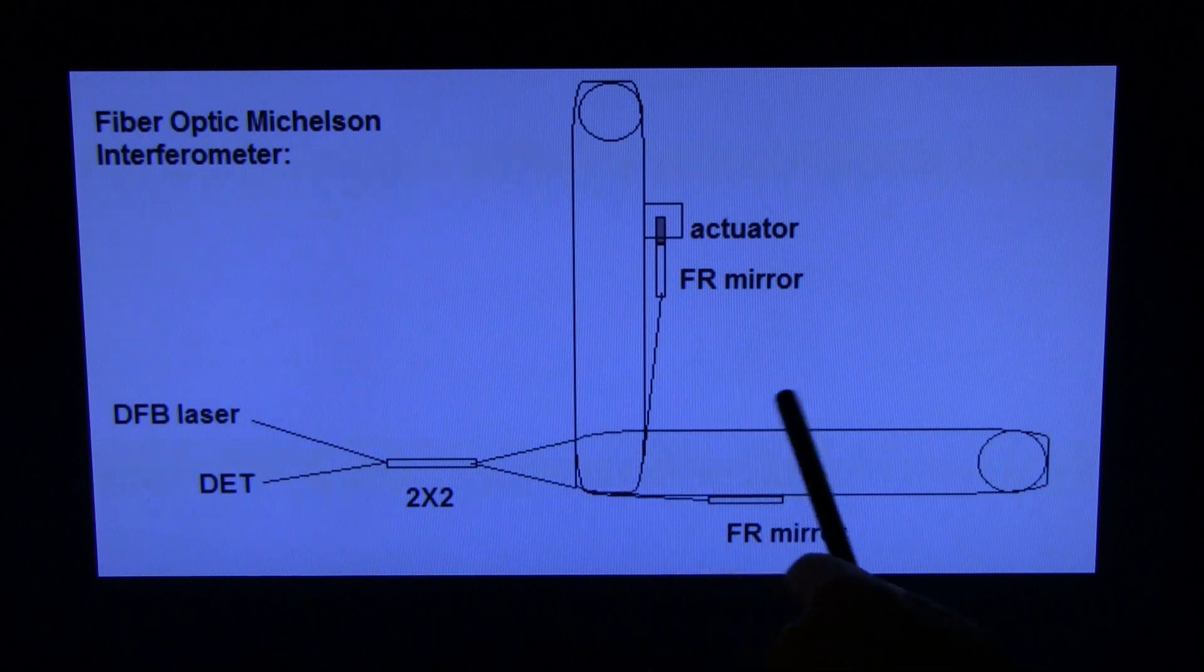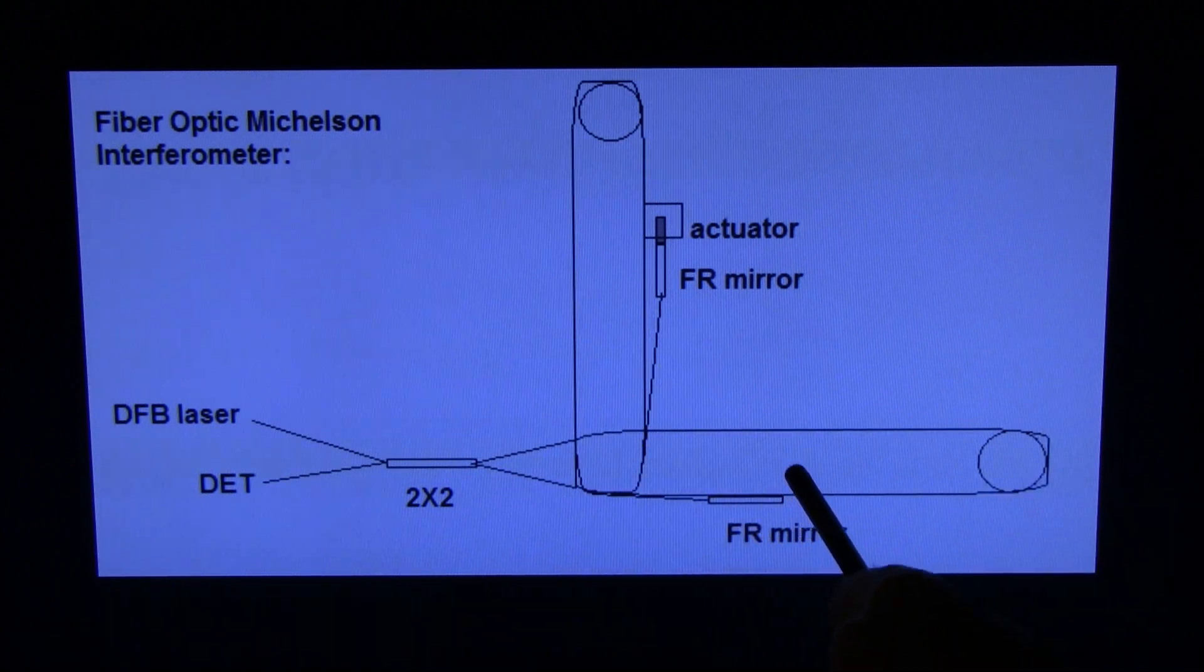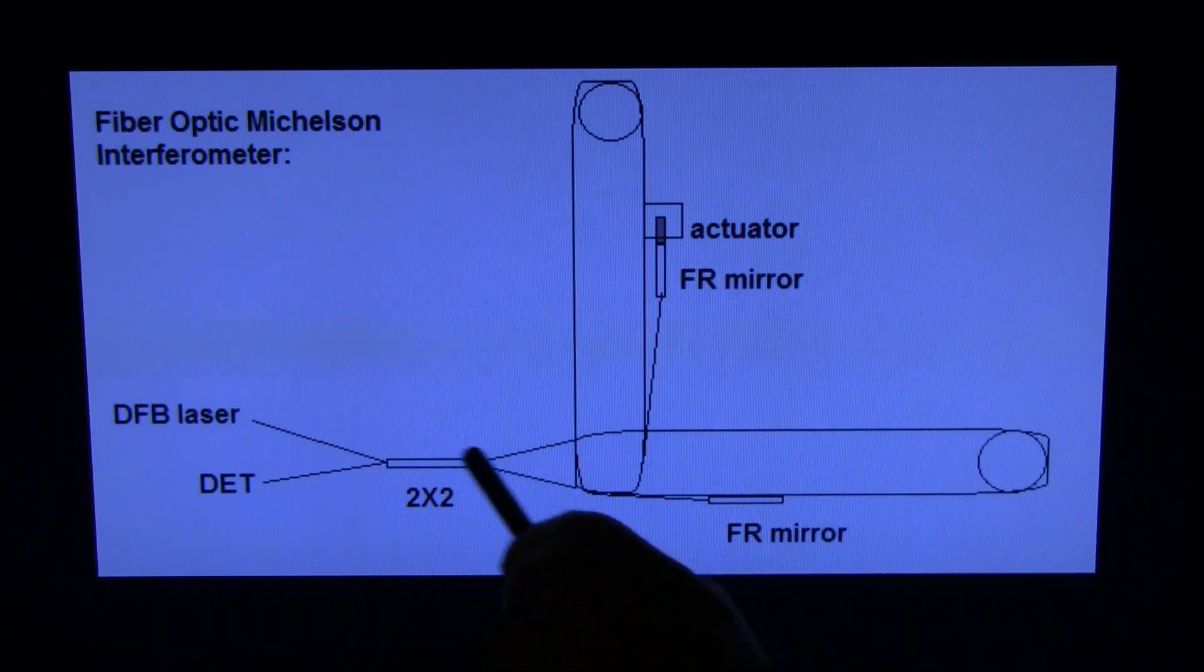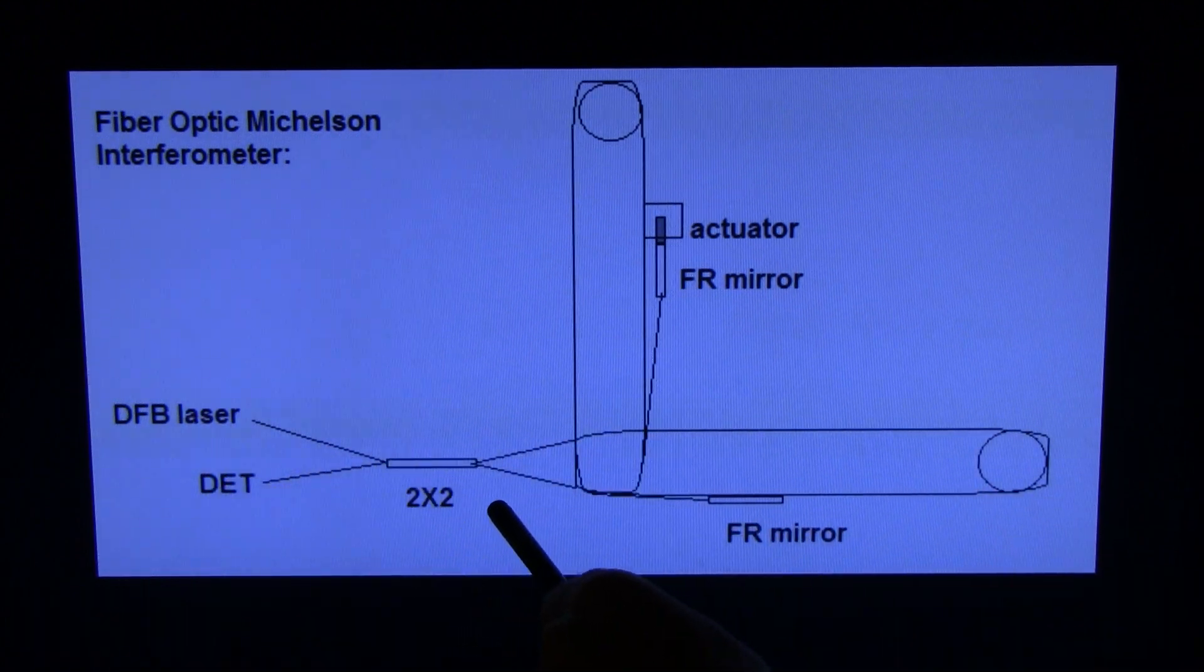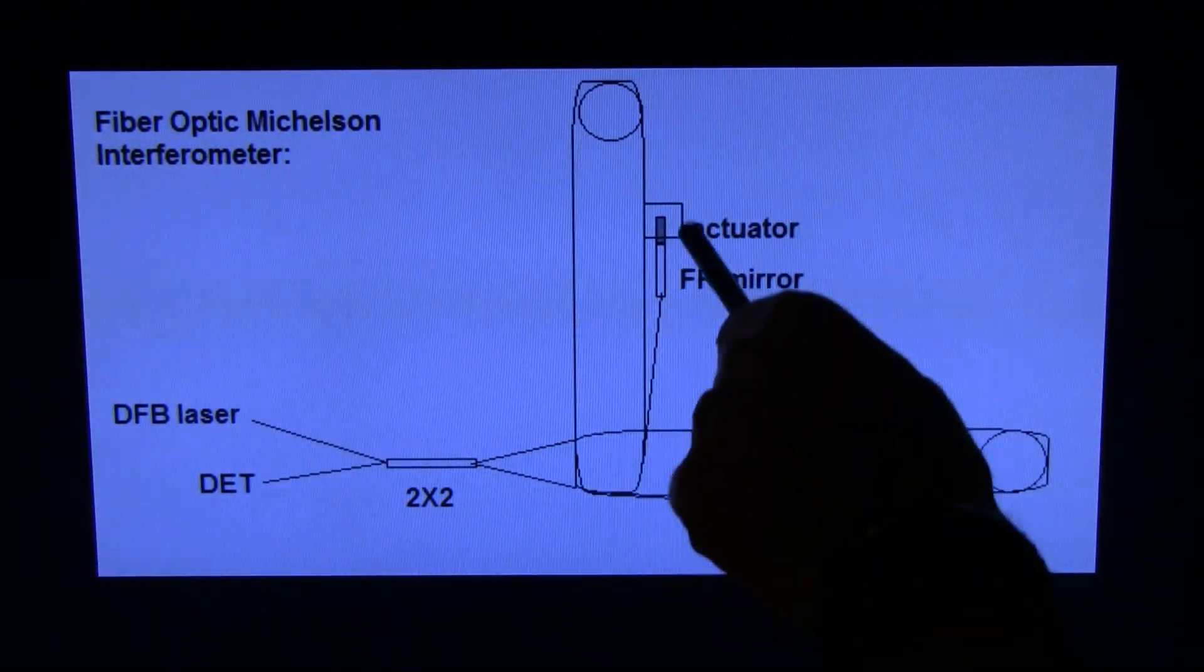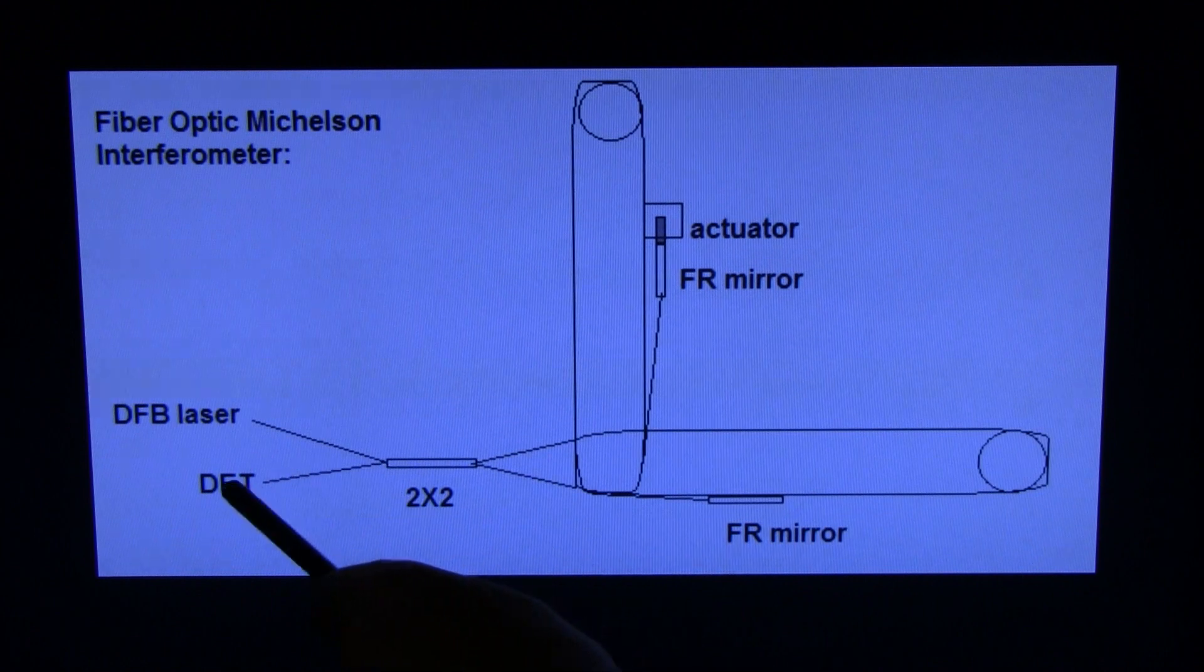And it's going to go around, actually, it'll go this way, it'll come to our Faraday rotator mirror, bounce back, and go back through to our detector. The other arm, it's going to go around, I guess, this way, and it's going to go to our Faraday rotator mirror, then bounce back, and go back to our detector.